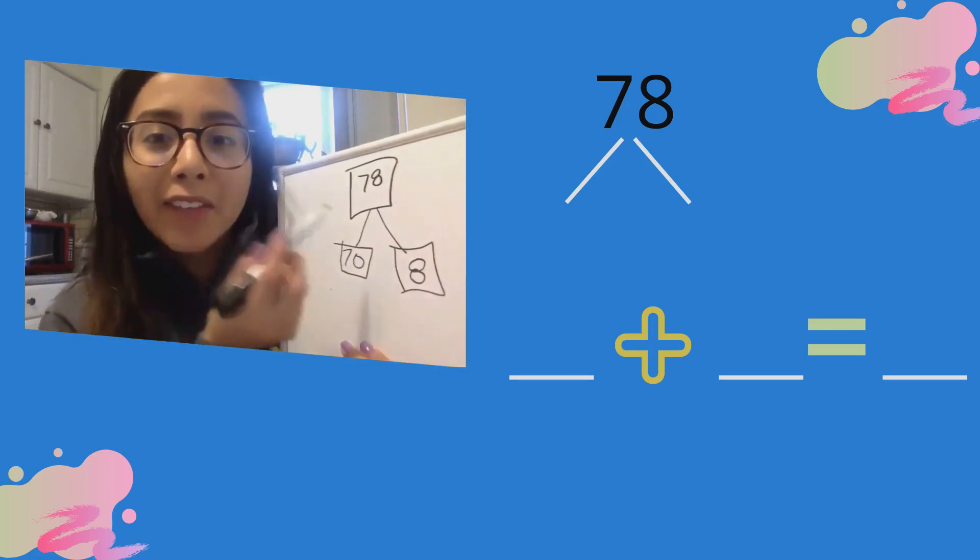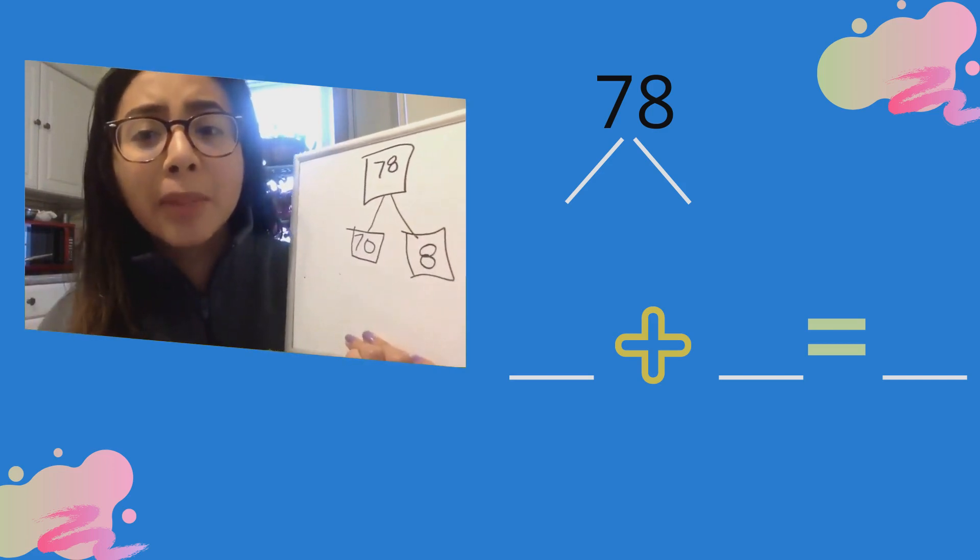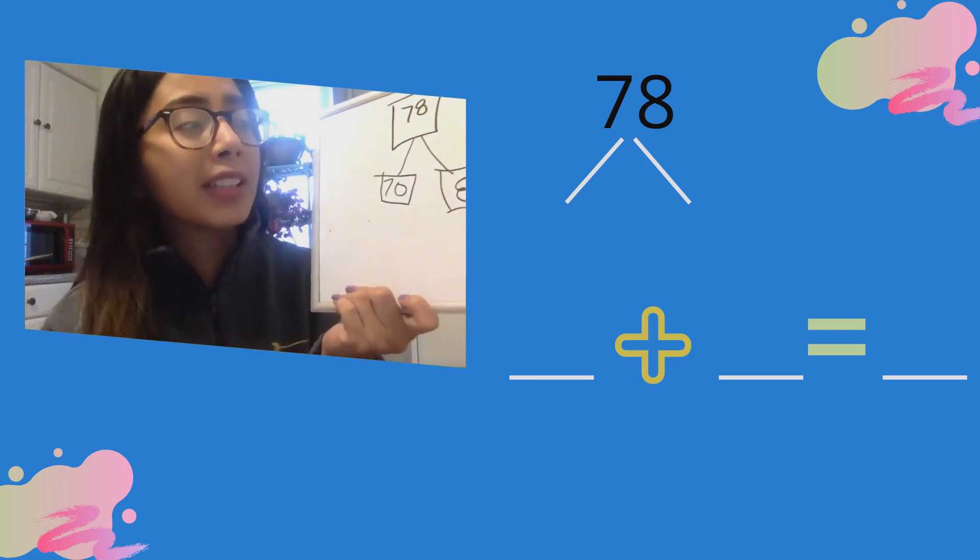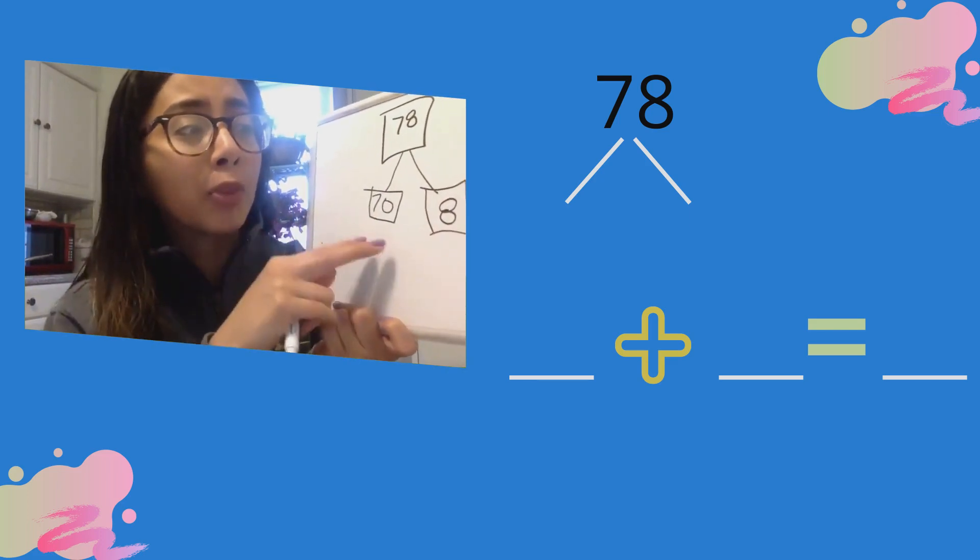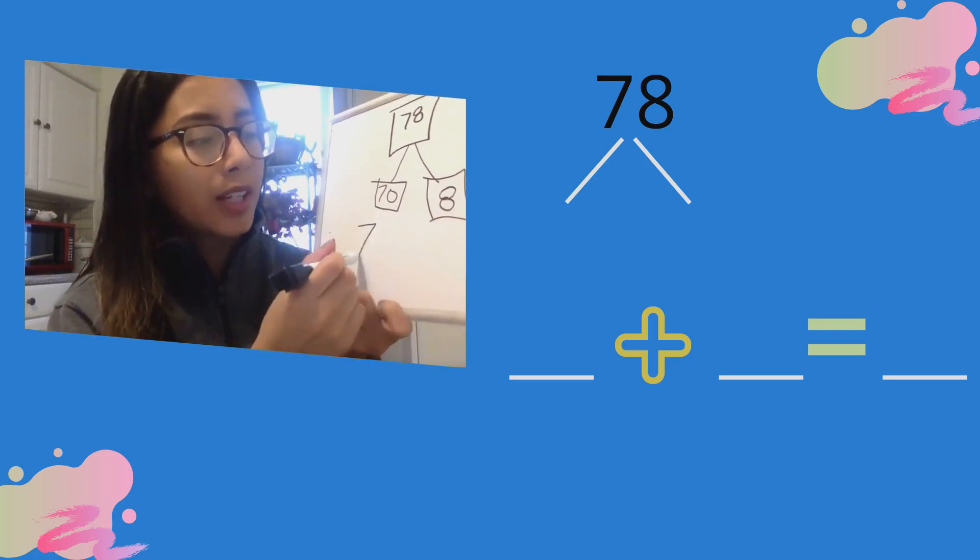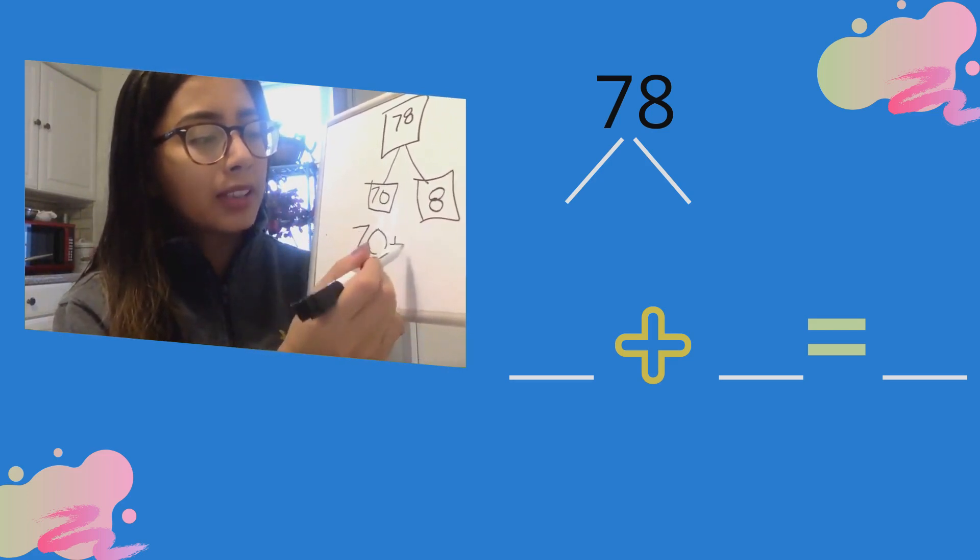So 70 and 8 makes 78. Let's see if we can make number sentences from this number bond. So number sentences are, I'm going to put two parts together, I'm going to add them together and get my total. 70 plus 8 equals my total, 78.